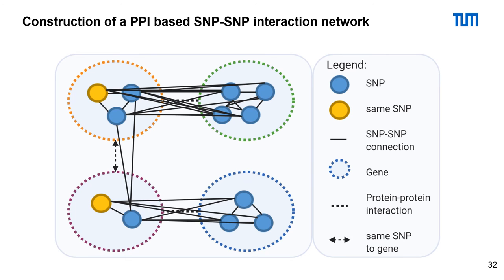Let's have a look at how GenEP Seeker builds the PPI-based SNP-SNP interaction network. If two SNPs affect the same gene, we connect them with each other. The big colored circles represent genes. If the PPI network shows that two genes are interacting with each other, all SNPs affecting those genes will also interact — we add edges between the corresponding SNPs. If one SNP affects two genes that are not interacting according to the PPI, we still add edges between the corresponding SNPs.